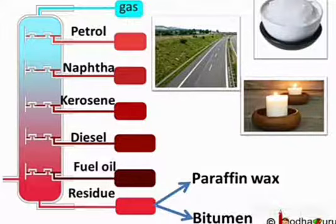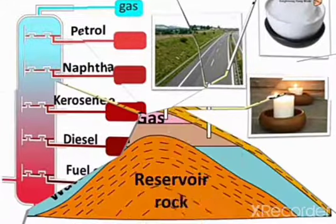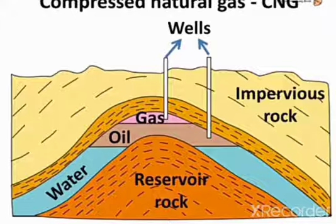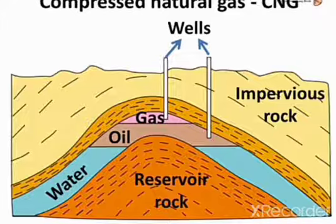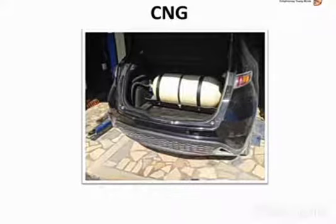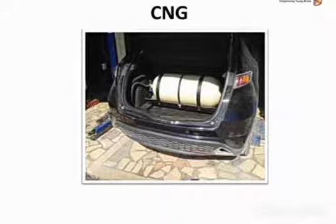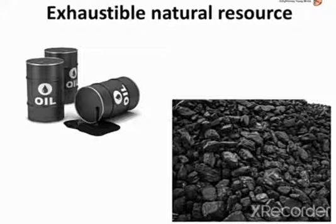Every component of petroleum has some use, hence it is often called black gold. Natural gas is a very important fuel because it is easy to transport through pipes. Natural gas is stored under high pressure as Compressed Natural Gas, or CNG. CNG is used for generating power and as fuel for cars. CNG is less polluting than petrol, diesel, etc.